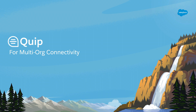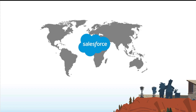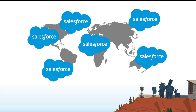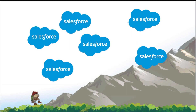One of the most architecturally significant decisions a Salesforce shop must make is their org strategy — how many instances of Salesforce will your company deploy? Many end up leveraging multiple as the work to consolidate different business processes, data models, and governance requirements from disparate lines of business into one instance can be a tall order. This presents a key architectural gap as there is no clear way to share data through a standard technological interface.